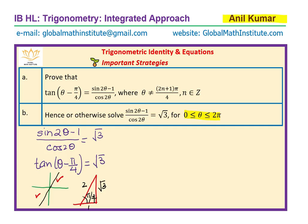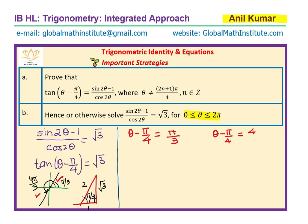The two solutions are: the first angle is π/3, and the other angle is π + π/3, which is 4π/3. So we can write: θ - π/4 = π/3, or θ - π/4 = 4π/3.